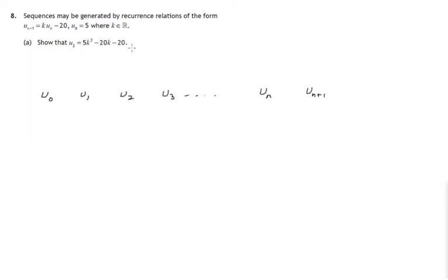The recurrence relation tells us how to get from the nth term to the n plus 1th term. It tells us to multiply the nth term by k and then subtract 20. So the procedure is multiply by k and take away 20.